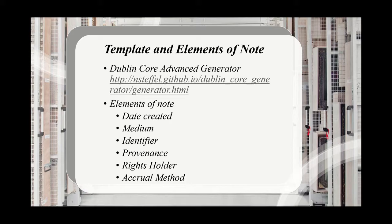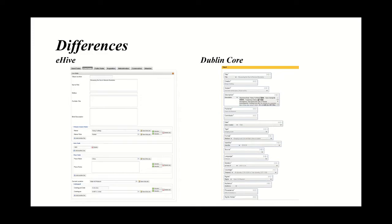There are a few differences between eHive and Dublin Core. Although eHive follows the standards of Dublin Core, there were some differences. For example, eHive calls what Dublin Core calls the 'creator' instead the 'maker.' Another example is that while eHive has an element for place, Dublin Core includes this in the coverage category. And eHive has a place for object number — this would be a catalog number or accession number — whereas Dublin Core has this under a category called identifier.